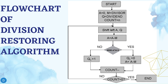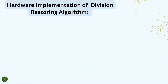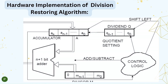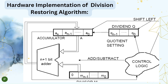Step 7: Finally, register Q contains the quotient and A contains the remainder. Now let's see the hardware implementation of the Division Restoring Algorithm. The restoring division algorithm is a classic technique for performing integer division. It involves a series of steps that use simple arithmetic operations such as addition and subtraction to compute the quotient and remainder of a division operation.